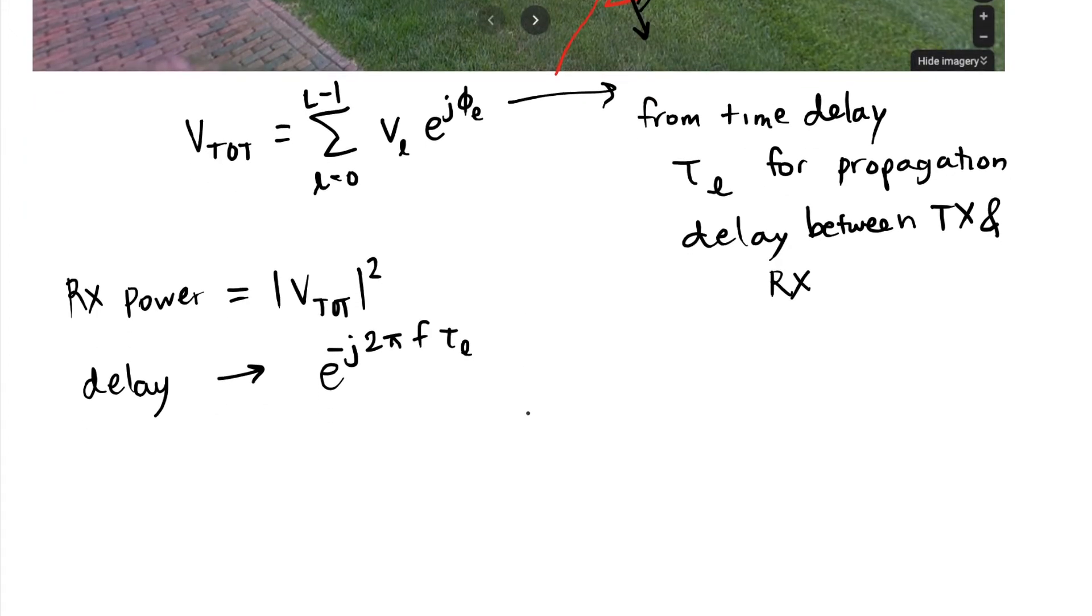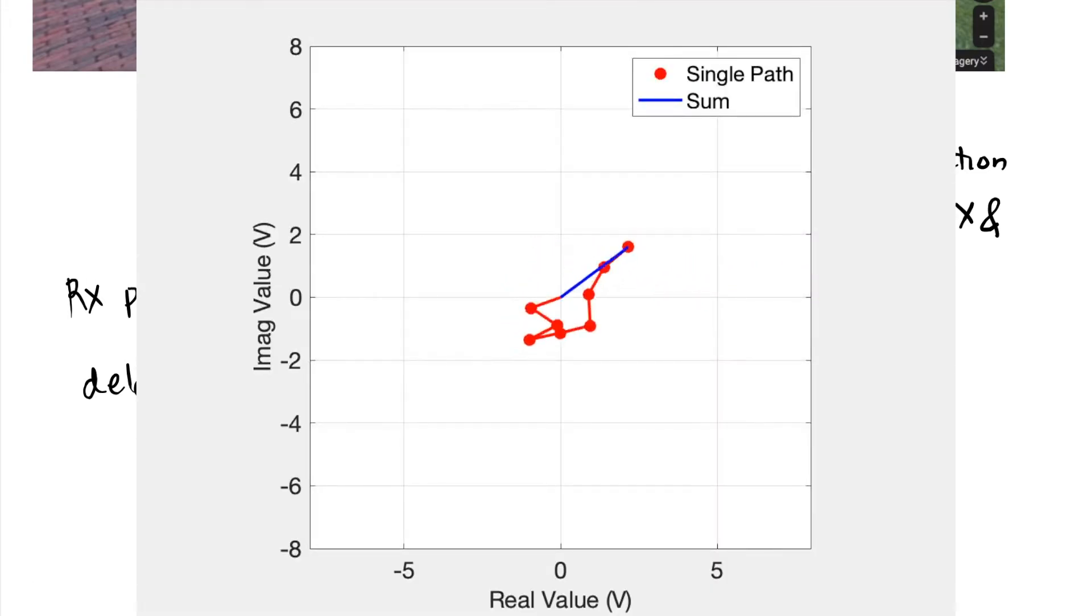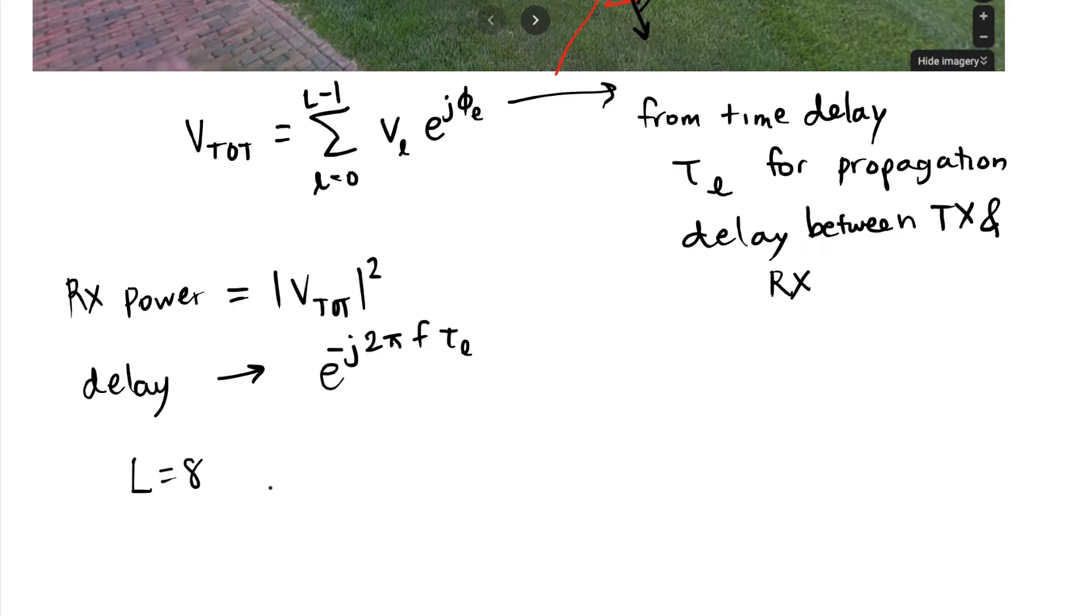Finally, there aren't always two multi-path components. Things start to have even more entropy when L is greater than two. Take for example L equals eight paths, each with about equal amplitude. As these phasors rotate with different rates, the sum v total changes in its distance from the origin, and thus the power is changing. Sometimes the power is large relatively speaking, and sometimes the power is nearly zero.